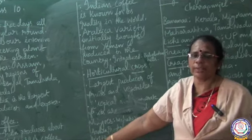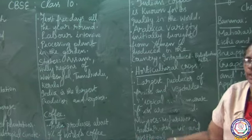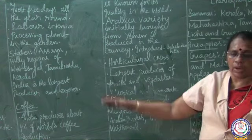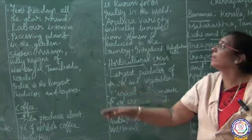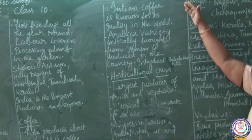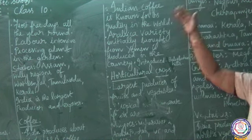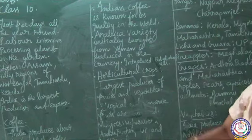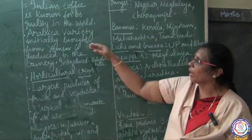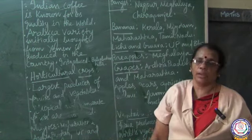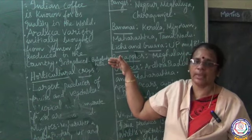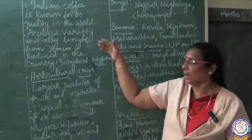To recap coffee: it is a plantation and beverage crop. India produces nearly 4% of world coffee production. Indian coffee is known for its quality. The Arabica variety, originally from Yemen, is now produced here. Baba Budhan Hills in Karnataka is famous for coffee cultivation.